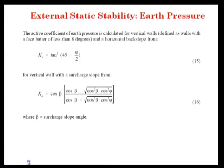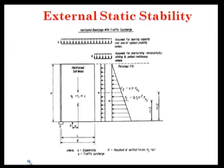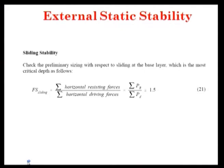For earth pressure, the active earth pressure Ka equals tan²(45° - φ/2) for a vertical wall. With surcharge and slope, this kind of earth pressure can be obtained from these equations. For external stability analysis, the factor of safety against sliding equals horizontal resisting forces divided by horizontal driving forces (PR/PD), which should be greater than 1.5.